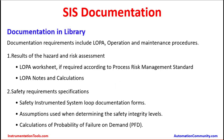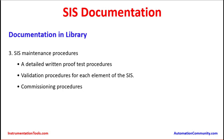LOPA notes and calculations are needed when calculating the probability of failure on demand and safety integrity level. There will be some assumptions since every scenario and every plant condition cannot be physically reproduced, so there could be some risk measurement requirements, and those must be documented. Other required documents include: safety requirements specifications, safety instrumented system loop documentation forms, assumptions used when determining safety integrity levels, and calculations of probability of failure on demand. These calculations are based on the plant's SIS installation and are done at the beginning of a project or when additional SIS facilities are being built. SIS maintenance procedures are also required.